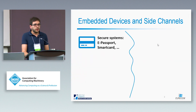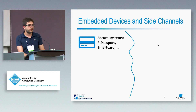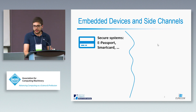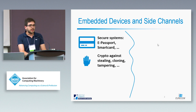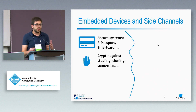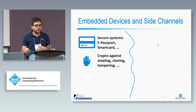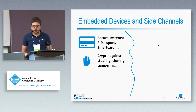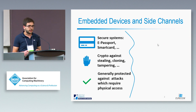When we look at embedded devices, there are some that are designed for security applications, such as passports and smart cards, and they use cryptography to protect against a range of attacks. For example, these attacks usually involve stealing the device, trying to clone it, trying to tamper with it, so they are also protected against physical attacks which require physical access.